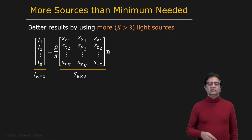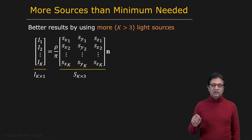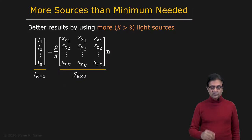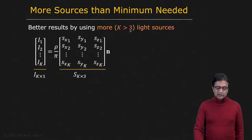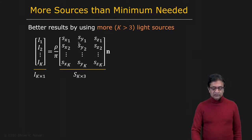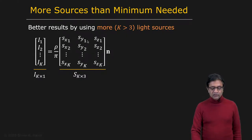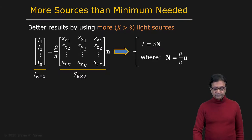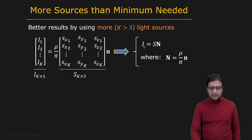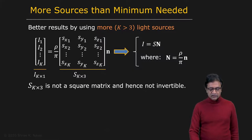Generally, you don't want to do photometric stereo with the minimum number of light sources. You want to use as many light sources as the application allows, because that gives more robust results. When you have more than three light sources — say K, where K is greater than three — you have more than three intensity measurements at each point and a source matrix that is K by three, which is no longer square. So S is no longer directly invertible.